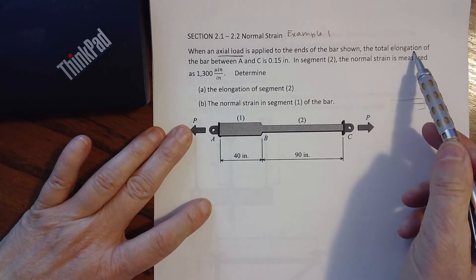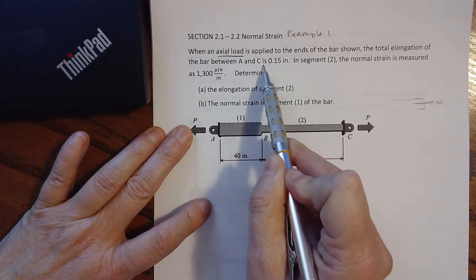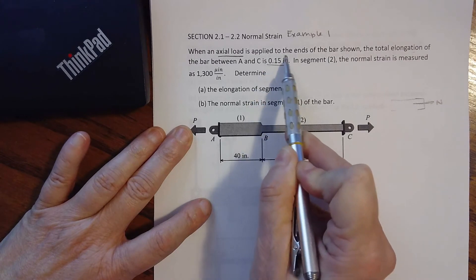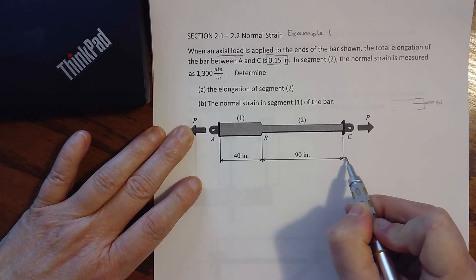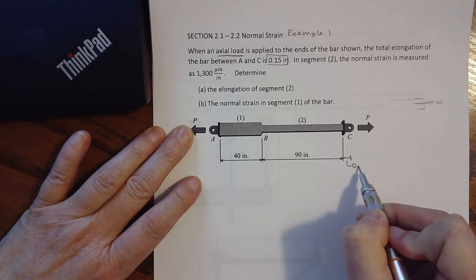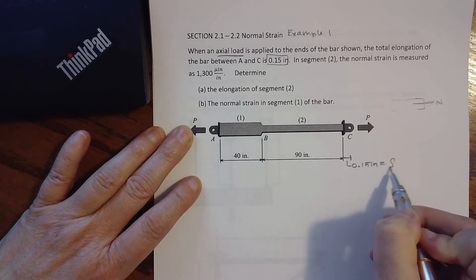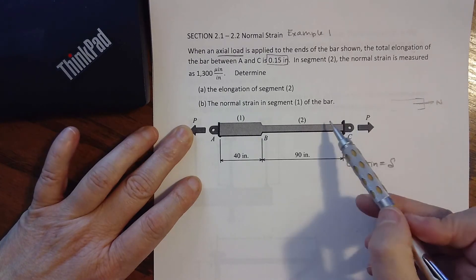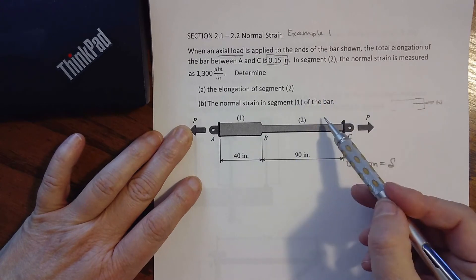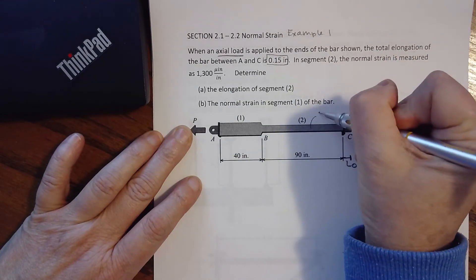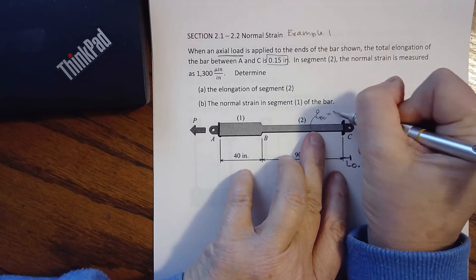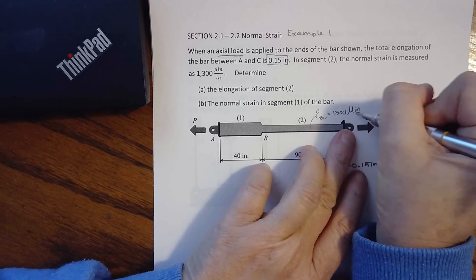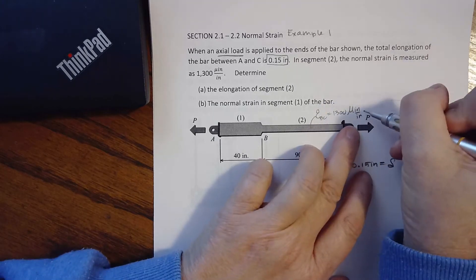The total elongation of the bar between A and C is 0.15 inches. So the total elongation - if I look at this overall bar as I load it, its overall elongation is 0.15 inches. In segment 2, the normal strain is measured as - so here we are measuring the normal strain of section 2, that's B to C.